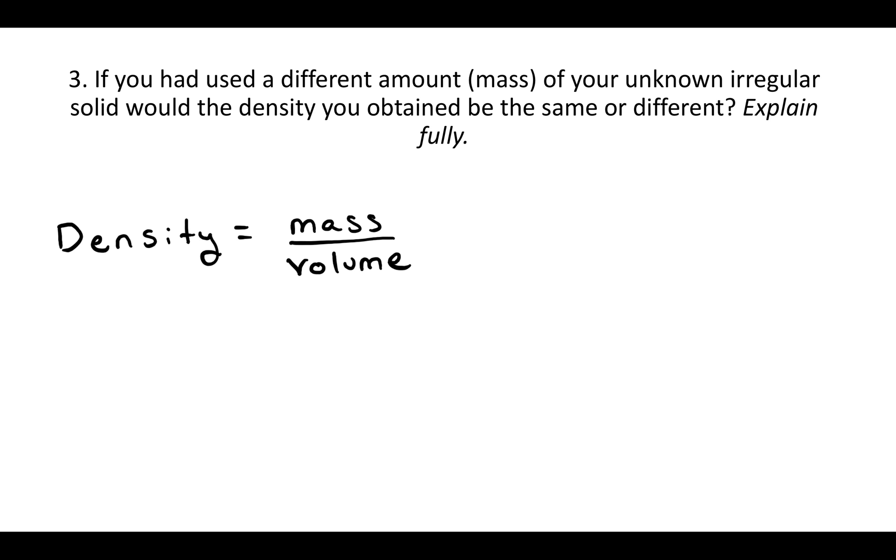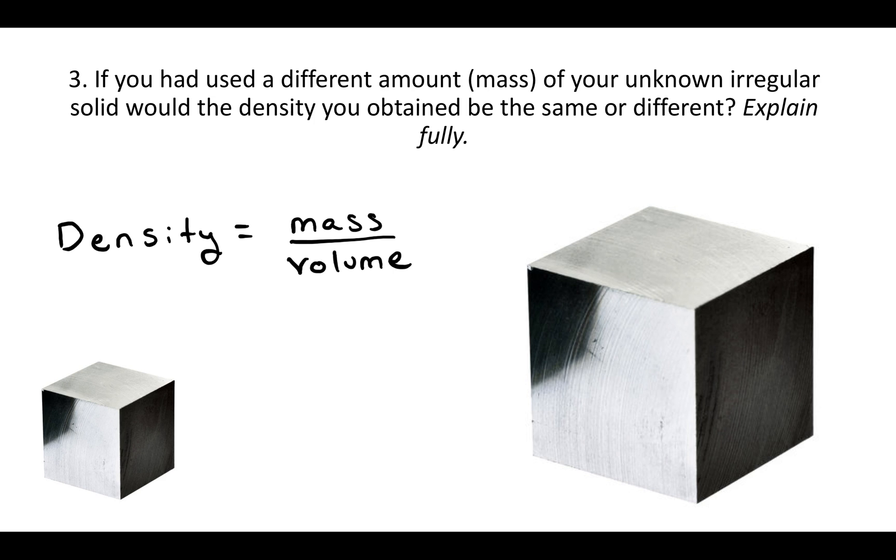So they're asking about density, and density is mass over volume. Now they're saying if you used a different mass, let's say you used a bigger mass—you took the same metal, just a bigger chunk of it—well notice that when the mass goes up like this, the volume goes up too, and the ratio stays the same. So no matter how much metal you use, the density should stay about the same.